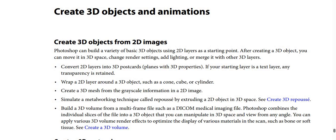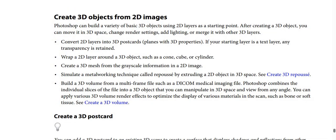You can simulate a metalworking technique called repoussé by extruding a 2D object in 3D space. You can also build a 3D volume from a multi-frame file, such as a DICOM medical imaging file. Photoshop combines the individual slices of the file into a 3D object that you can manipulate in 3D space and view from any angle.